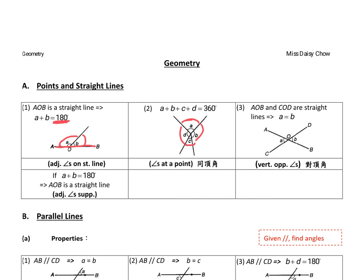And then the third reason is called vertical opposite angles. So whenever you see the cross, two straight lines form a cross, the opposite angle would be the same. The reason is vertical opposite angle, and of course angle AOD is also equals to angle COB.